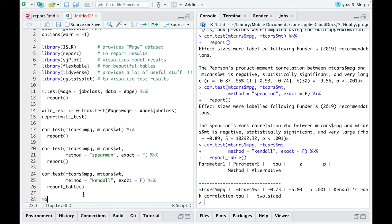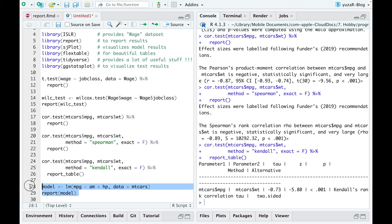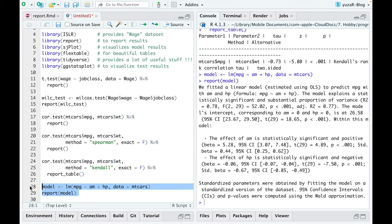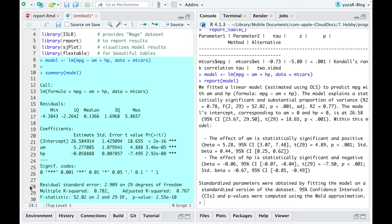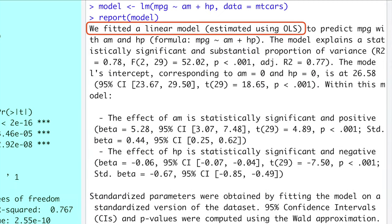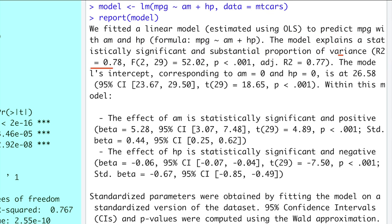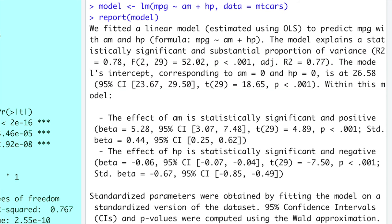In contrast, report package provides a standardized way to report model results and again delivers so much more than the classic summary function. Particularly, it describes what kind of model we used, while the summary does not. It interprets the R-squared, while the summary does not. It uncovers what is behind the mysterious intercept, while the summary assumes that you already know it.